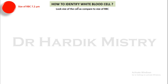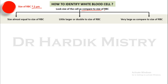How to identify white blood cells in peripheral blood smear. First of all, look at the size of the cell as compared to the size of RBC. We are going to compare different types of WBC relative to the size of the RBC. The size of the RBC is normally 7.2 micrometers. You have to find out whether the size is almost equal to the size of RBC, little larger or double to the size of RBC, or very large as compared to the size of RBC.